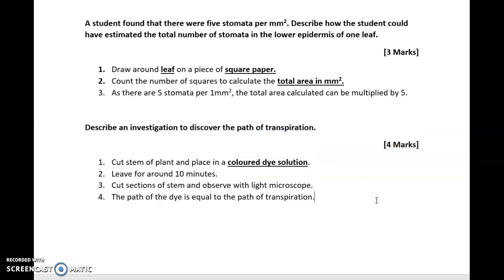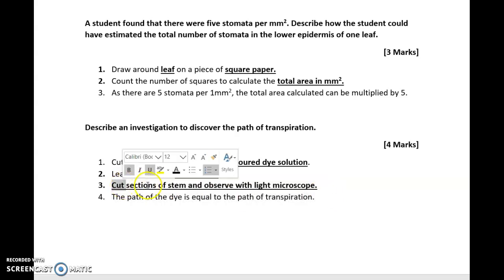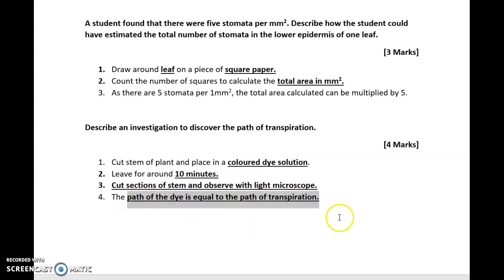You need to cut the stem of the plant and place it in a colored dye solution. It's the only way you can discover the path of transpiration. You've got to leave it for an allocated amount of time. Ten minutes sounds like a good time to me. Then you're going to cut sections of the stem and observe that with a light microscope. It's important that you mention that you have to cut sections of the stem and that you observe it with the microscope. Then it's important to state that the path that the dye takes will mirror the path of transpiration. Obviously, as the dye is taken up into the xylem vessels and we observe that in the light microscope, whatever path the dye takes, that will be the same as the path of transpiration.